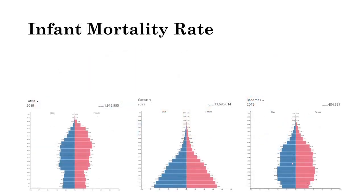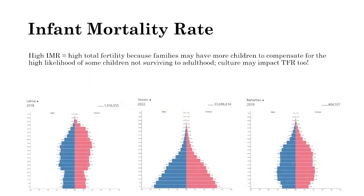High infant mortality rate countries also typically have high TFRs because families have more children to compensate for the high likelihood that some children won't survive to adulthood — it's a kind of insurance. Culture also plays a big role: in cultures where many children signal prosperity, or where religion limits access to family planning, contraceptives, and abortion, birth rates are higher, leading to higher TFRs.